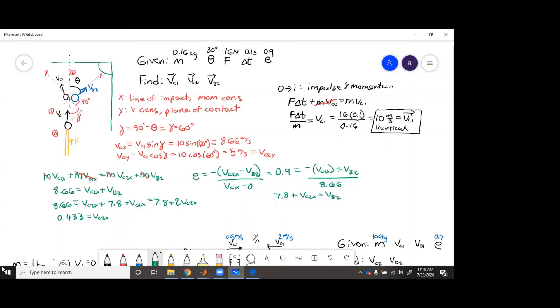So we take that, plug it in over here, 7.8 plus 0.433 is 8.23 meters per second equals vb2. So we know that vb2 is going 8.23 meters per second at theta, which was given in the problem, so we're going to go 30 degrees to the right of the vertical.